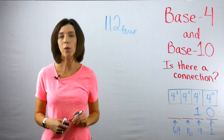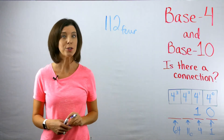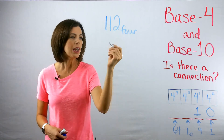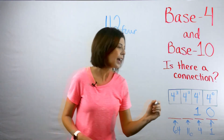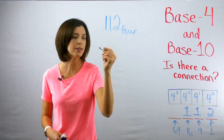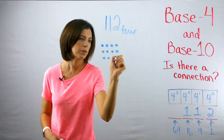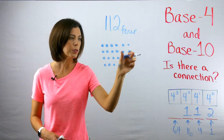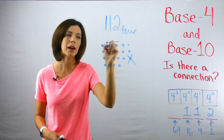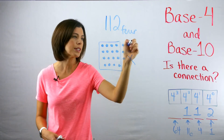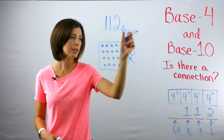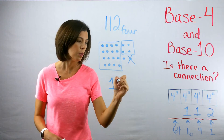Let's find the number that comes before 112 base four. I think of it as one group of 16, one group of four, and two ones, and I draw that out. If I get rid of one, I still have my group of 16 and my group of four, but now I only have one remaining one. So the answer is 111 base four.